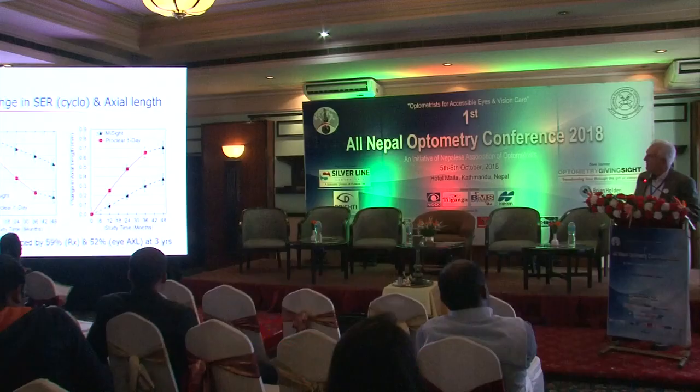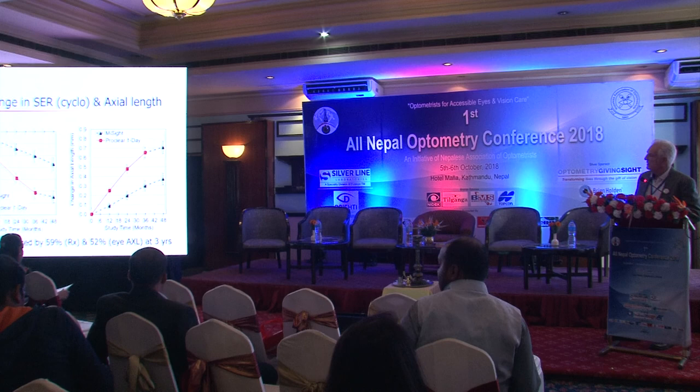Here are the results. The red line and symbols represent the control group, showing reasonable progression over 36 months. The blue dotted line shows the progression in children wearing MySight lenses, demonstrating a reduction in progression of about 59% as measured by refraction. On the right-hand side, the change in axial eye length shows the controlled children in red, with the MySight group showing much less elongation — a reduction in axial elongation of about 52%.